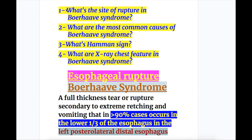Question number one: what's the site of rupture in Bohr-Haave syndrome? Number two: what are the most common causes of Bohr-Haave syndrome? Number three: what's Hamman's sign? And number four: what are the X-ray chest features in Bohr-Haave syndrome?